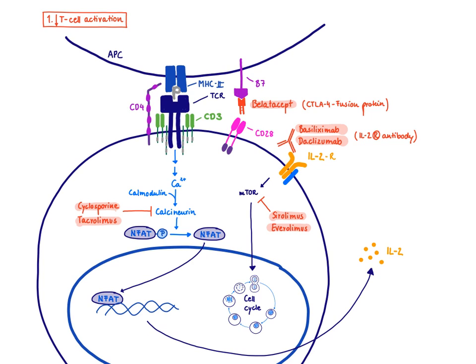Another drug is belatacept, which specifically inhibits signal 2 — the interaction between B7 and CD28. Belatacept is a CTLA-4 fusion protein, essentially a synthetic CTLA-4. CTLA-4 has a very high affinity for B7 and competes with CD28 for that interaction. Therefore, CD28 cannot bind to B7, signal 2 is lost, and T-cell activation is decreased. Notably, CTLA-4 is found on T-cells and normally provides negative feedback to decrease T-cell activation.